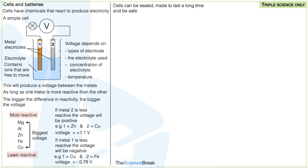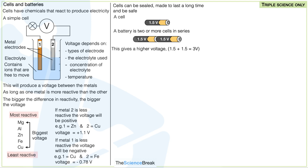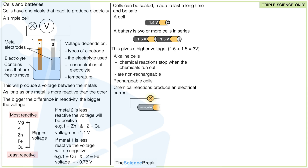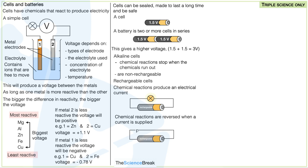Cells can be sealed, made to last a long time, and made to be safe. Here is a cell we use in everyday life — a 1.5 V cell. A battery is two or more of these cells joined in series, giving a higher voltage: 1.5 + 1.5 = 3 V. For alkaline cells, the chemical reactions stop when the chemicals run out and they are non-rechargeable. For rechargeable cells, the chemical reactions produce an electrical current, but the chemical reactions are reversed when a current is supplied, returning to the start chemicals to produce more electricity. This applies to home-use cells and also to large batteries in vehicles such as cars, buses, and trucks.